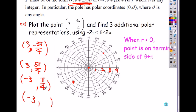Or, can you also make it negative radius? Negative what, 7π/4. So you have four different ways to write the exact same point right here.